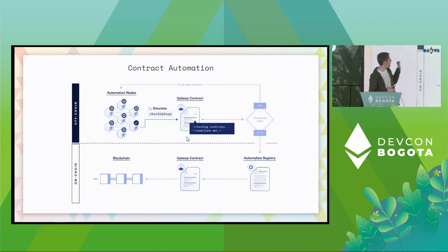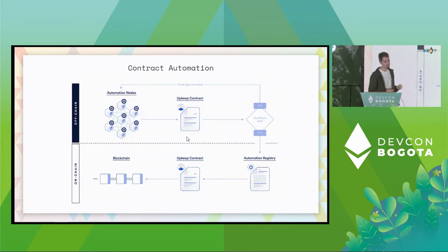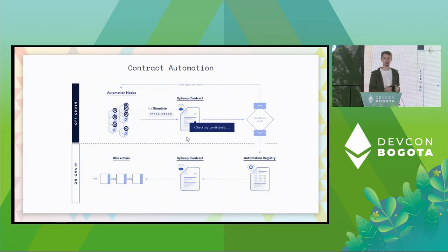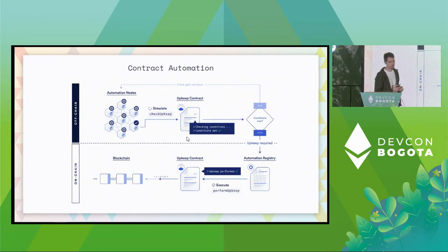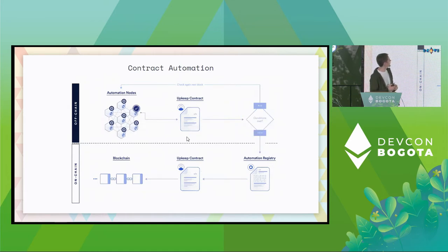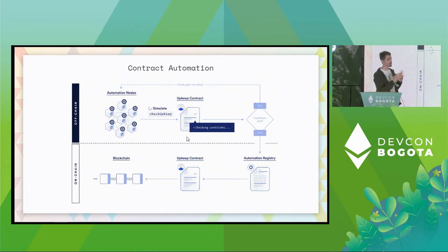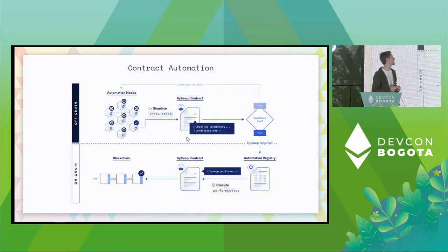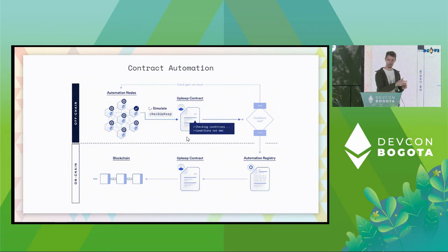We have a set of oracles or automation nodes that are monitoring the chain. The upkeep contract is just any regular smart contract written in Solidity or Vyper, and it has a special function called check upkeep. That function will be evaluated by our Oracle network whenever a new block is mined, but it will be evaluated in a simulated environment using the eth_call RPC endpoint of an Ethereum node. So we never hit the chain with these evaluations — no transaction lands on chain, and we can call this on every block without incurring any cost.